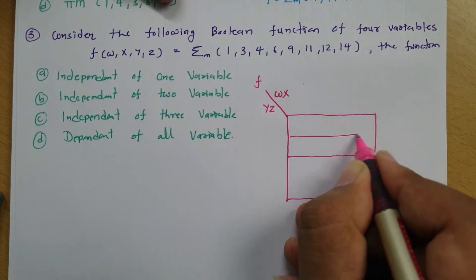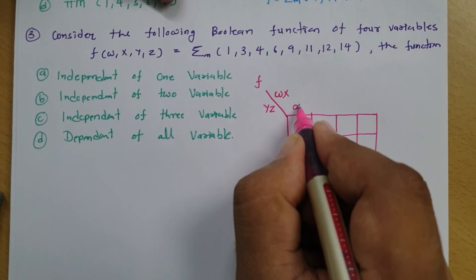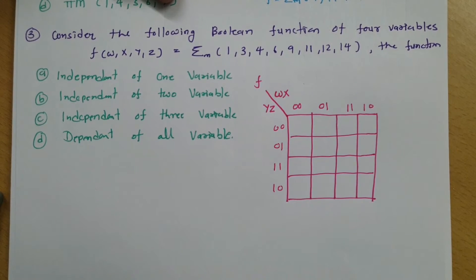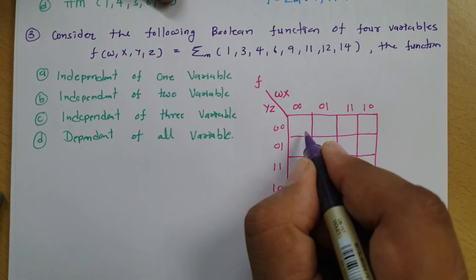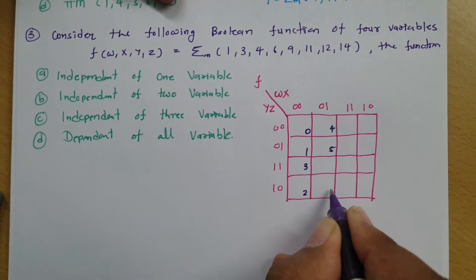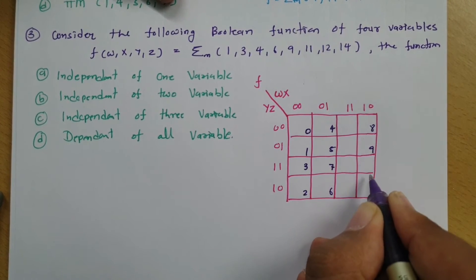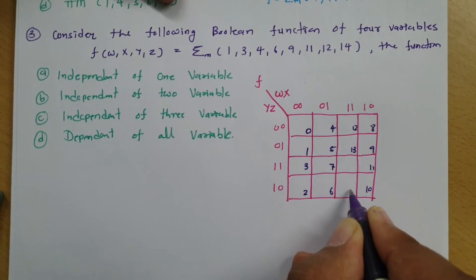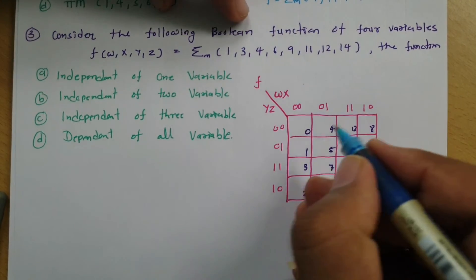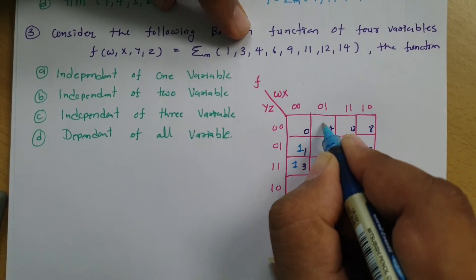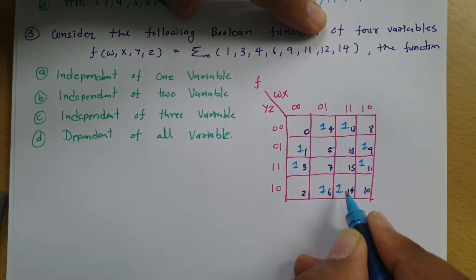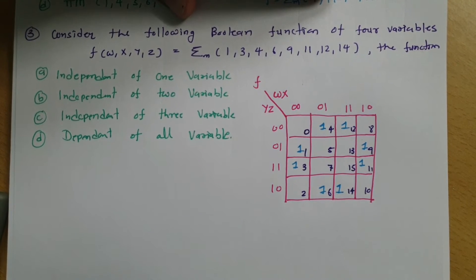Let me simplify this by drawing the KMAP. The function f has variables WXYZ. WX follows the pattern 00, 01, 11, 10 and YZ similarly. Location positions start from 0: 0, 1, 2, 3, 4, 5, 6, 7, 8, 9, 10, 11, 12, 13, 14, and 15. We place 1s at positions 1, 3, 4, 6, 9, 11, 12, and 14.